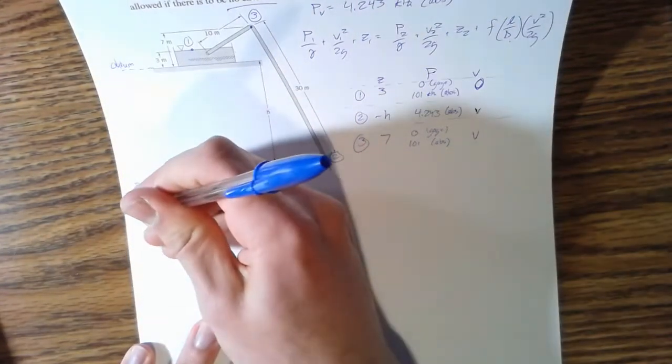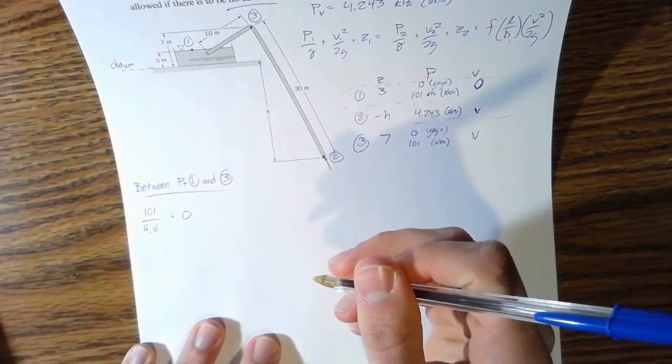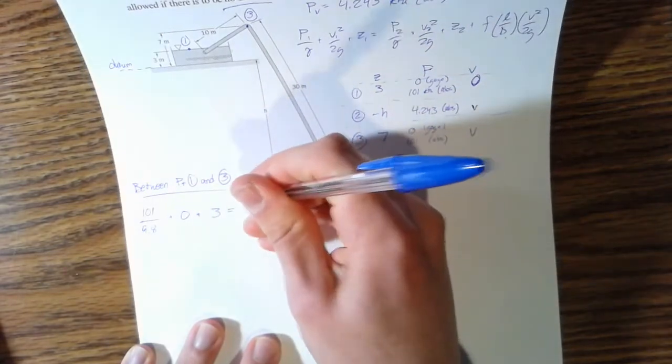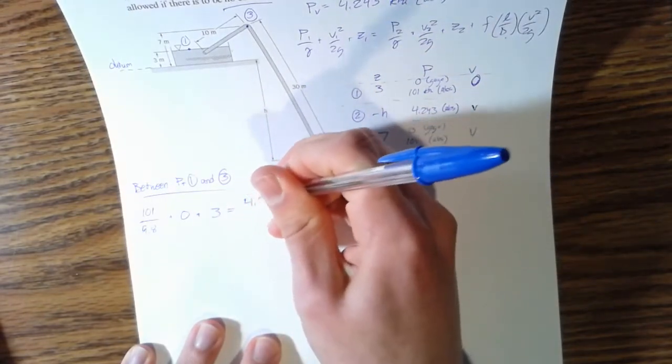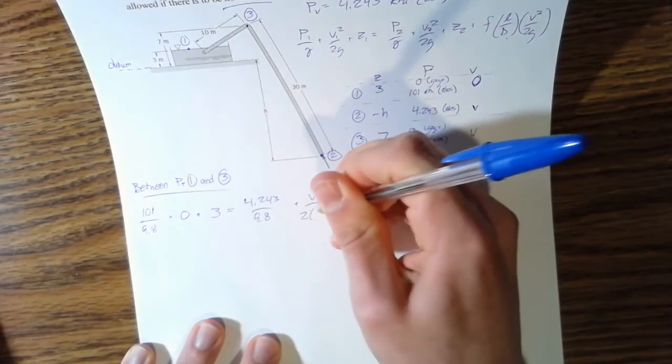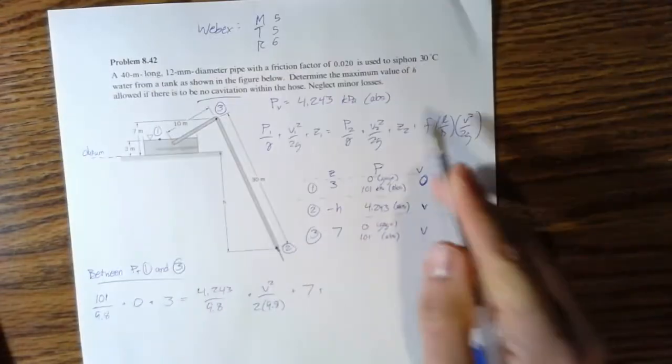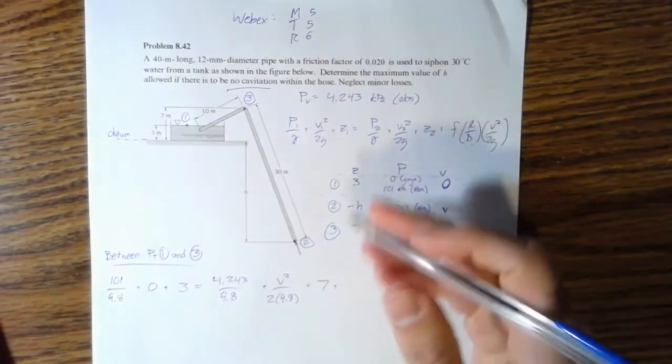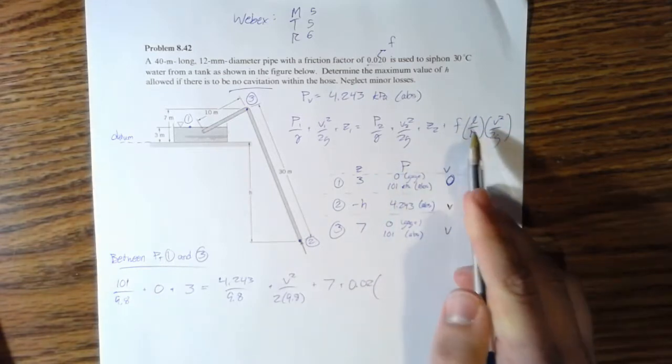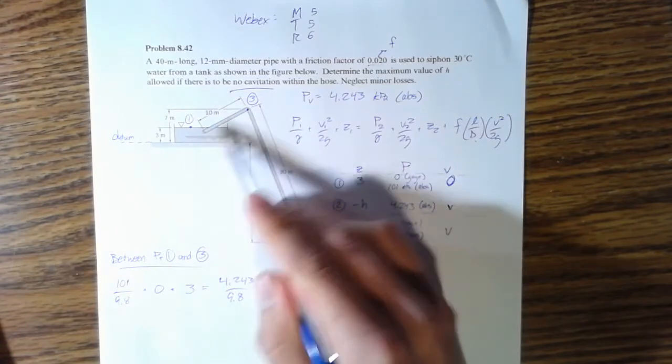Between 1 and 3 we have pressure of 101 over 9.8, a velocity of zero, and an elevation of 3, equal to our pressure at 3 of 4.243 over 9.8, the velocity that we don't know over 2 times g, plus our elevation. This last term here: friction factor is given to us as 0.02, and the length of the pipe - it's not the total length, it's just from one point to the other, so that's just going to be 10.